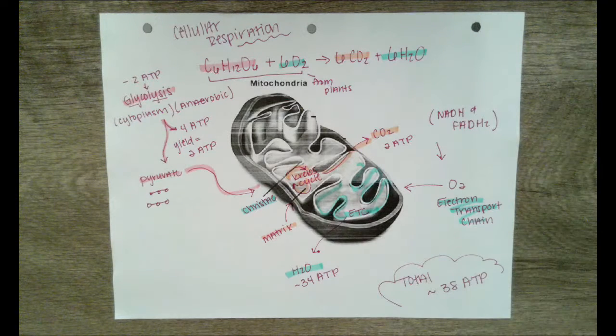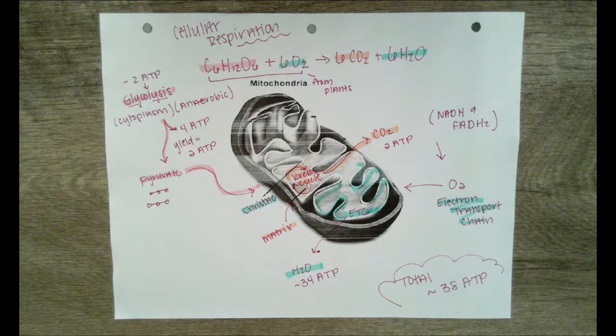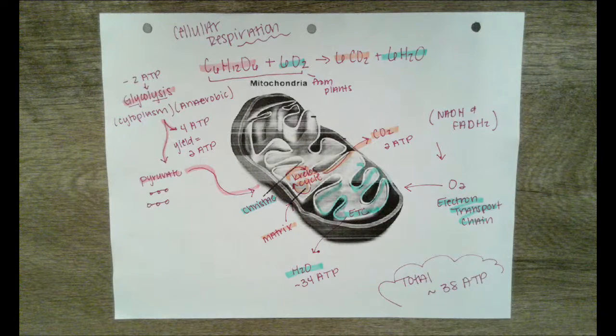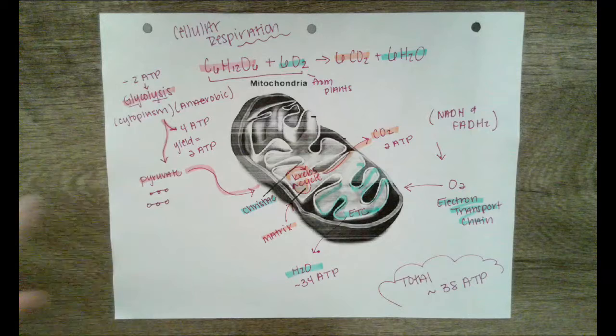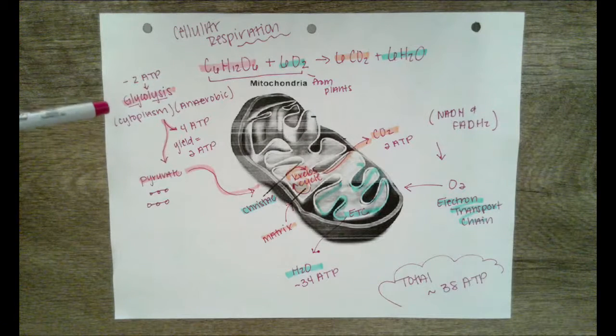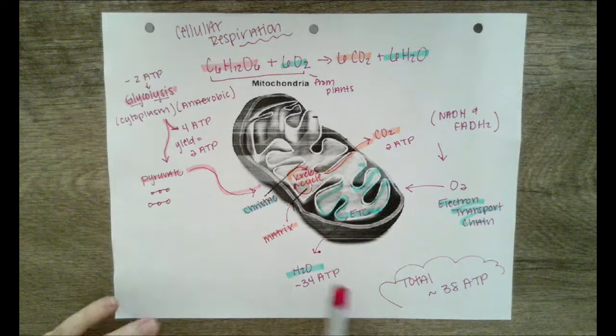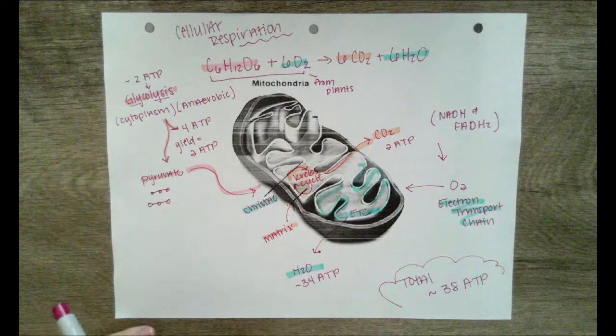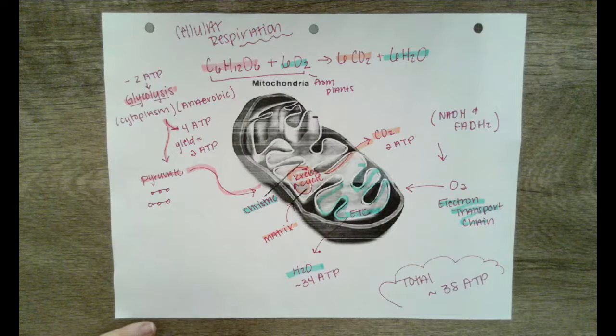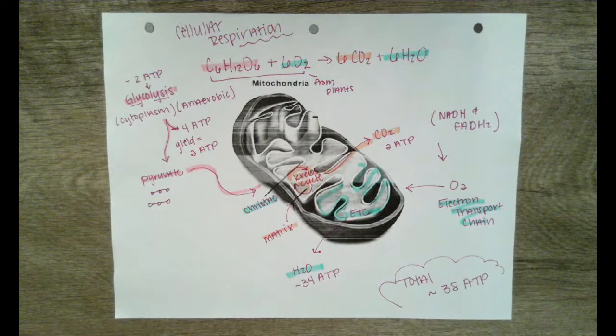There are three main stages or three main parts of respiration. The first part is called glycolysis. Glycolysis takes the glucose and splits it. This happens in the cytoplasm and it's an anaerobic process, which means it can happen without oxygen.